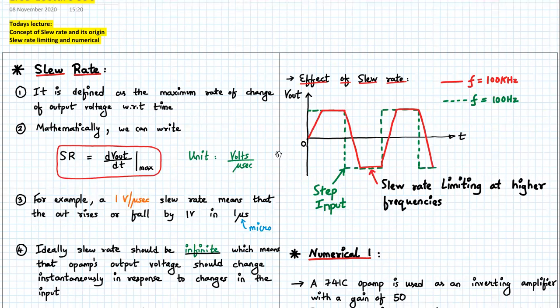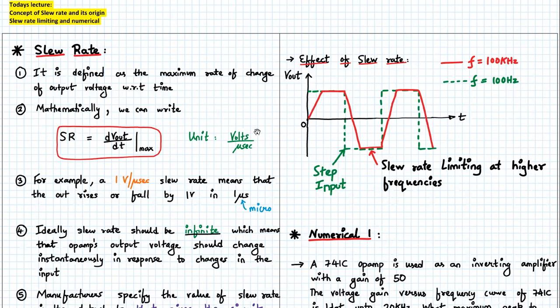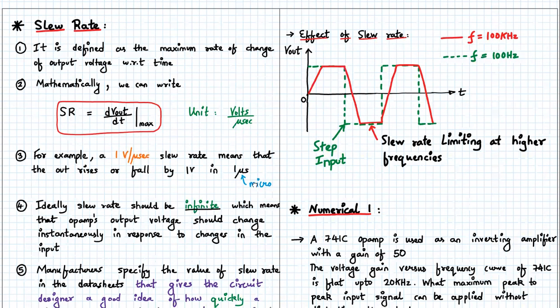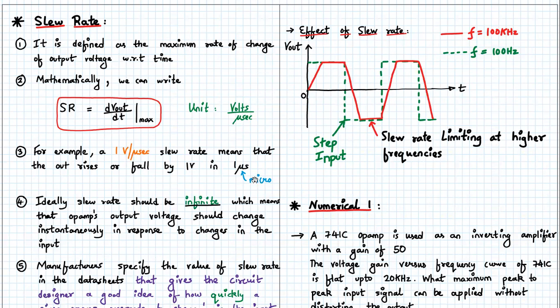So what is slew rate? Slew rate is defined as the maximum rate of change of output voltage with respect to time. Mathematically it is written as SR equals dV out by dt at max value and its unit is volts per microsecond. That's a very important notation: volts per microsecond. For example, one volts per microsecond slew rate means that the output voltage rises or falls by one volt in one microsecond.